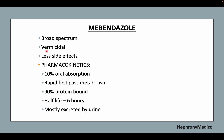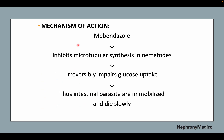Mebendazole is a broad spectrum vermicidal and has less side effects. There is rapid first pass metabolism and the half-life is 6 hours. The mechanism of action is that it inhibits microtubular synthesis in nematodes, irreversibly impairs glucose uptake, and thus intestinal parasites are immobilized and die slowly.